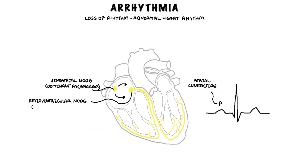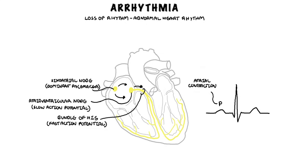The AV node generates a slow action potential, so there is a slight delay through the structure. Once the action potential traverses the AV node, it activates the proximal portion of the bundle of His, a specialized conducting tissue that generates a fast action potential. The period of time from the end of the P wave to the beginning of the QRS is termed the PR interval, and is where the activation of both the AV node and bundle of His occurs.